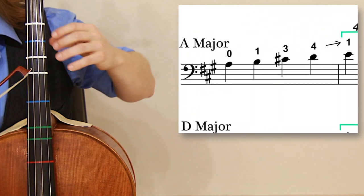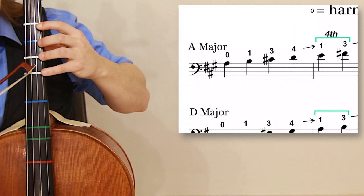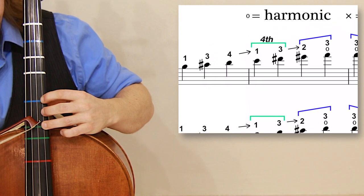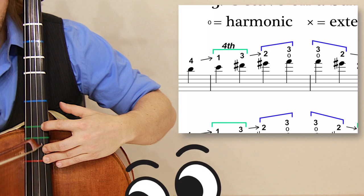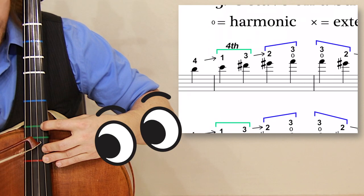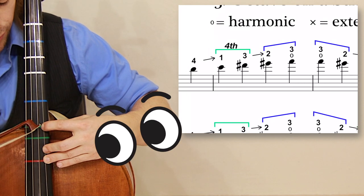On the very first exercise, A major, it's zero-one-three-four, shift up one-three, shift up one more time two-three. I want you to look at the hand shape that I'm making here. I'm actually putting the first finger where the F sharp is.